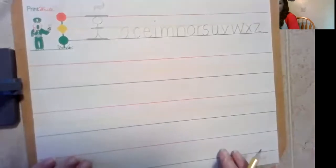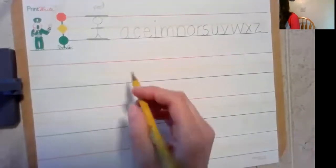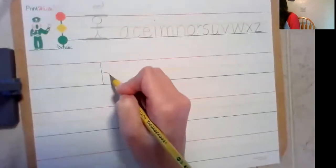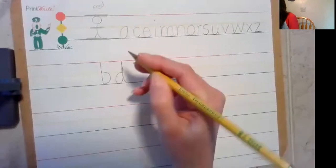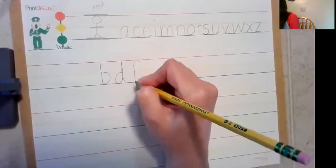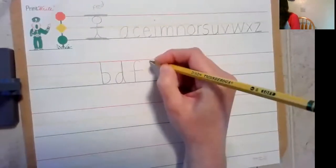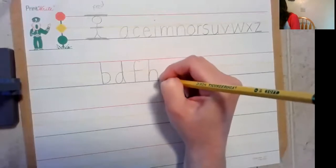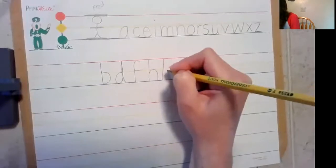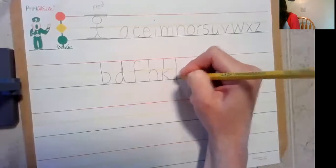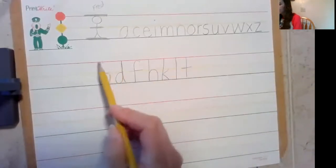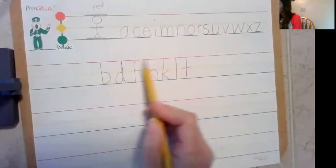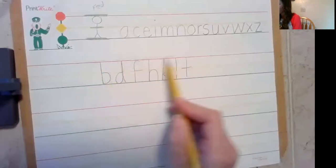And the next letters we're gonna go over are the taller letters, and those go up to Fred's headline. So we have B, D, F, H, K, L, and T. And if you notice, all of those touch that top line which we call the headline, they're tall.